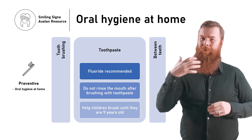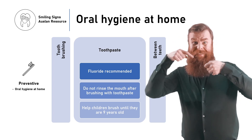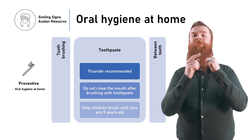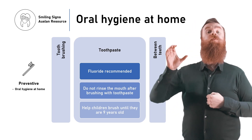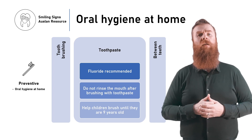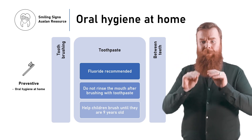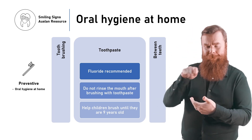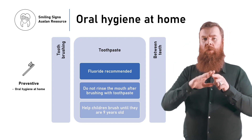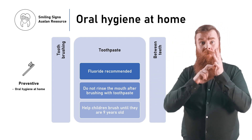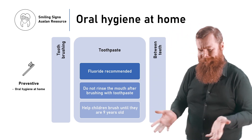Children and adults are recommended to use fluoride toothpaste. The fluoride helps to protect the teeth from tooth decay. After brushing, spit out the toothpaste but do not rinse your mouth with water. Do not swallow the toothpaste. Children can start to use toothpaste at 18 months. In Australia, children's toothpaste has less fluoride. Children 6 and above can start to use adult toothpaste. Adults should help children brush until they are 9 years old.